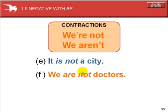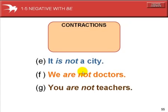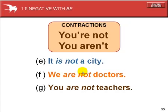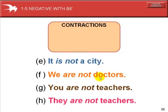We are not doctors. We're not doctors. We aren't doctors. You are not teachers. You're not teachers. You aren't teachers. In the first example, the apostrophe takes the place of the letter A in 'are.' In the second example, the apostrophe takes the place of the letter O in 'not.'